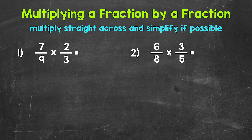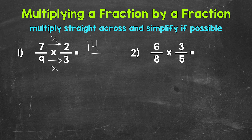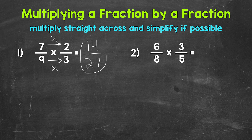Let's multiply straight across, starting with the numerators — the top numbers. 7 times 2 is 14. Now multiply the denominators: 9 times 3 is 27. We end up with 14 twenty-sevenths, which is in simplest form. The only common factor between 14 and 27 is 1, so this is in simplest form. Final answer: 14 twenty-sevenths.